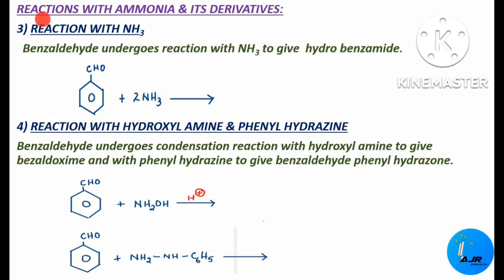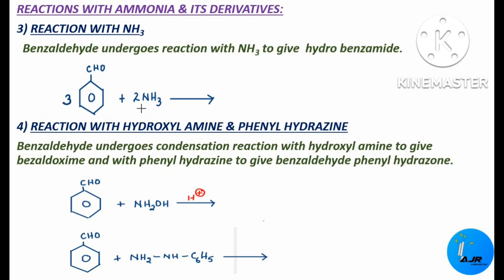Next is the reaction with ammonia and its derivatives. The first reaction is reaction with ammonia. When benzaldehyde reacts with ammonia, benzaldehyde undergoes reaction with ammonia to give hydrobenzamide. Here we have 3 molecules of benzaldehyde and 2 molecules of ammonia.